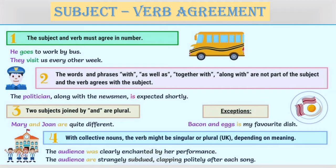Two subjects joined by 'and' are plural. For example, Mary and John are quite different. Exceptions can be: bacon and eggs is my favorite dish.